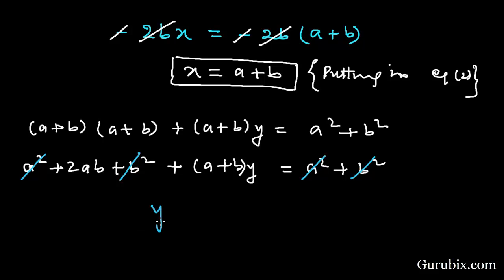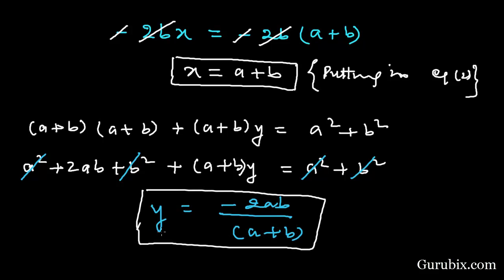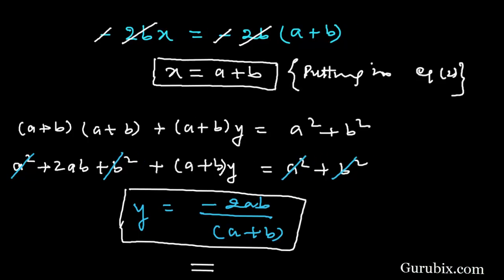We cancel out b squared with b squared and a squared with a squared. This means (a plus b)y equals minus 2ab, so y equals minus 2ab over (a plus b). This is the solution of the question. Thank you.